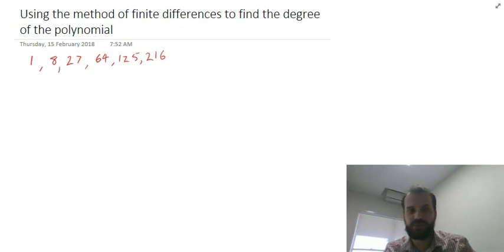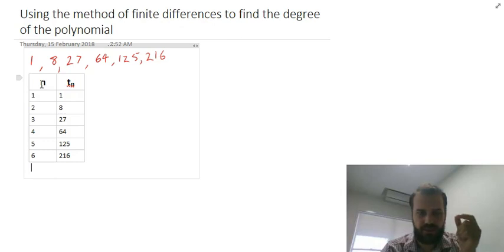First, put it in a table. So now it's in my table, n, the number that the term is, and the term number. So the first term is 1, the second term is 8...